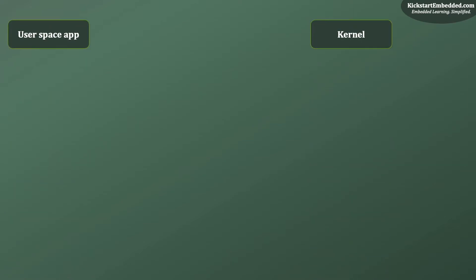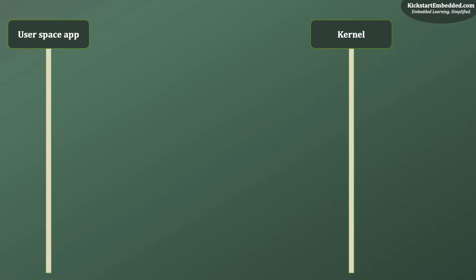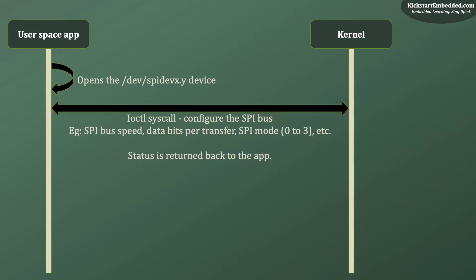Now let us look at a bare minimum SPIdev application. An application uses SPIdev in user space while a SPIdev driver runs within the Linux kernel. The first step is to open the SPIdev device — entries in /dev that look like spidev x.y — using file IO operations such as open or fopen. The next step is to configure the SPI bus using IOCTL calls, which may involve setting the clock speed and configuring the SPI operation mode. The status of this operation is returned by the kernel to the application.